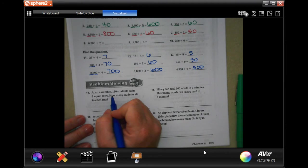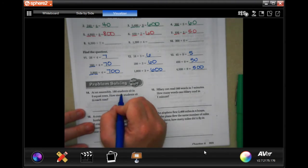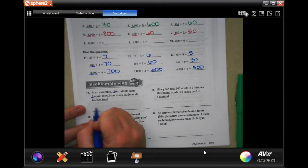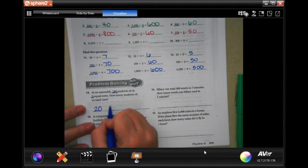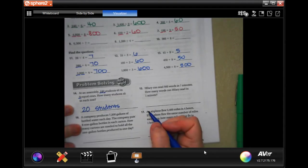At an assembly 180 students sat in nine equal rows. How many students sat in each row? Well, nine goes into eighteen two times, then add on that extra zero. Twenty students sat in each row.